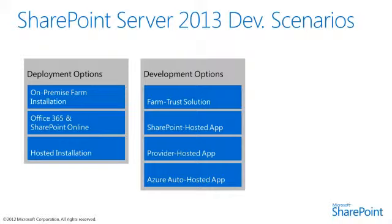For the new cloud app model for SharePoint, there are three different types of app options available to you. First is the SharePoint hosted app. This option is available in all types of deployments, whether it's in Office 365, on-premise, or hosted by a third-party solution. These types of solutions are deployed to a SharePoint hosted site and their business logic executes within the client — essentially the browser. One limitation for a SharePoint hosted app is that it cannot interact with other apps.